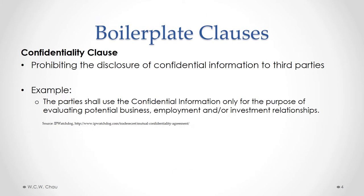Many contracts include a confidentiality clause, and such a clause would prohibit the disclosure of confidential information to a third party. Here's an example of a clause which says that the parties to the contract can use the confidential information only for the purpose of the contract, which is to evaluate a business, employment, or investment relationship.